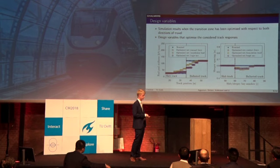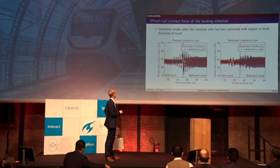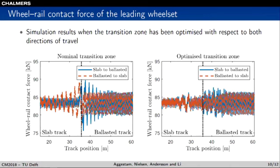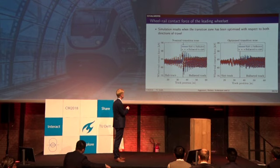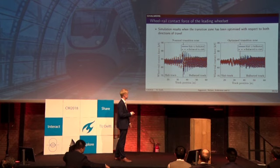Looking at the time history responses, we compare the nominal transition zone and the optimized transition zone in terms of wheel-rail contact force of the leading wheelset for both directions of travel. Due to the inherent stiffness gradient in the nominal transition zone when going from slab track to ballasted track, we get increased dynamic loads in the vicinity of the transition. After minimizing this maximum value, these contact force values are clearly reduced.